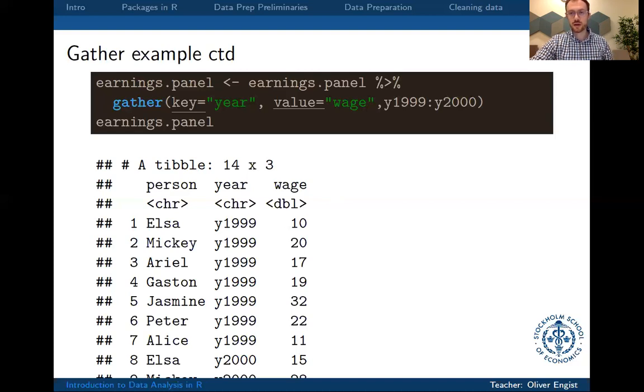So this is something that you might encounter very frequently, that data arrives in this so-called wide format and you might even have to transform it in this format because this is the format that you're using when you're actually running regressions.